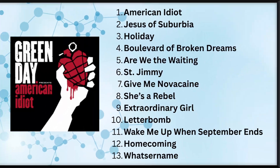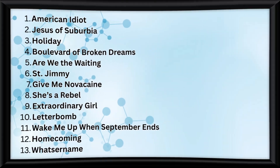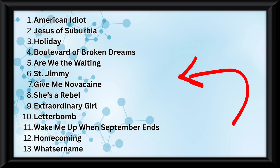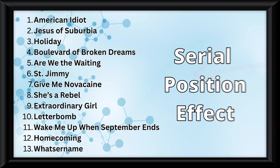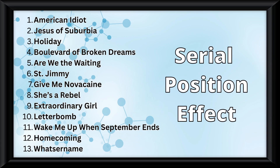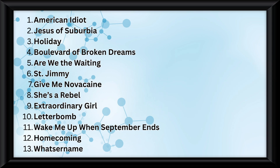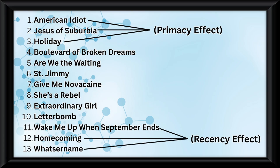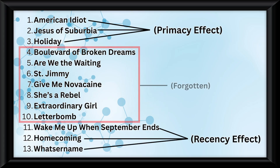Now let's picture each song name in a list, because a lot of things in life you need to remember are in lists. The serial position effect tells us that I am more likely to remember the first things — the primacy effect — and the last few things — the recency effect — on the list. This means the middle things are often forgotten.